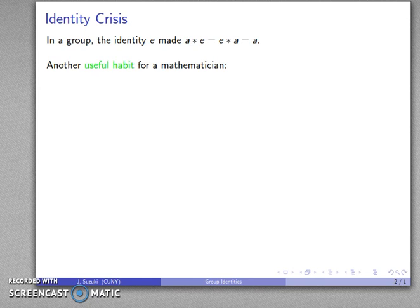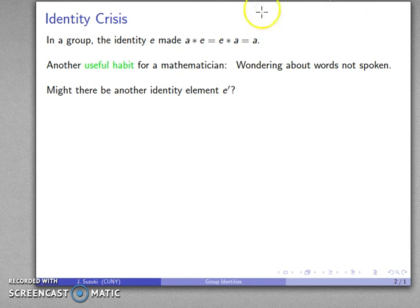Now, here's another useful habit to develop your mathematical sophistication: wonder about the words that aren't spoken. When we define the identity for a group, we said it's an element that makes this true. And the question might be, might there be a different identity element? Might there be something else which holds for all A?